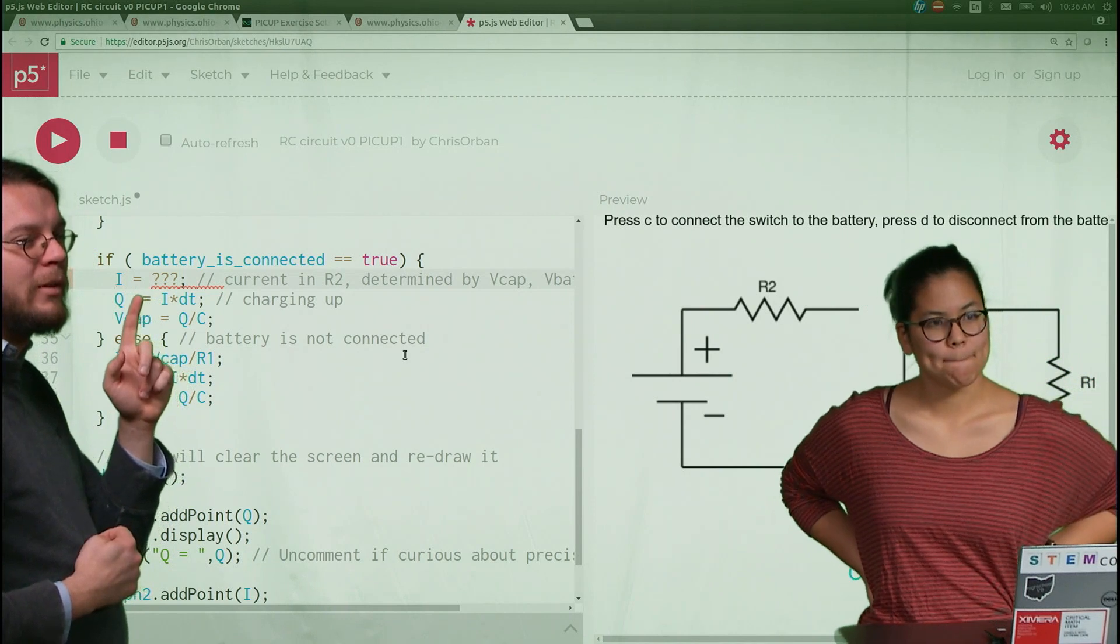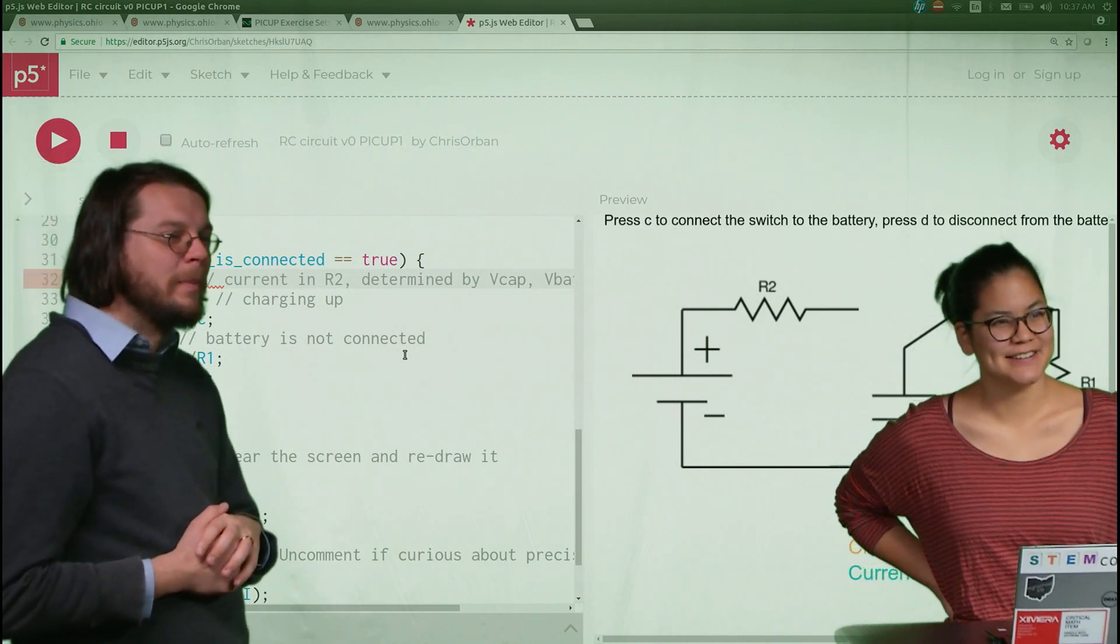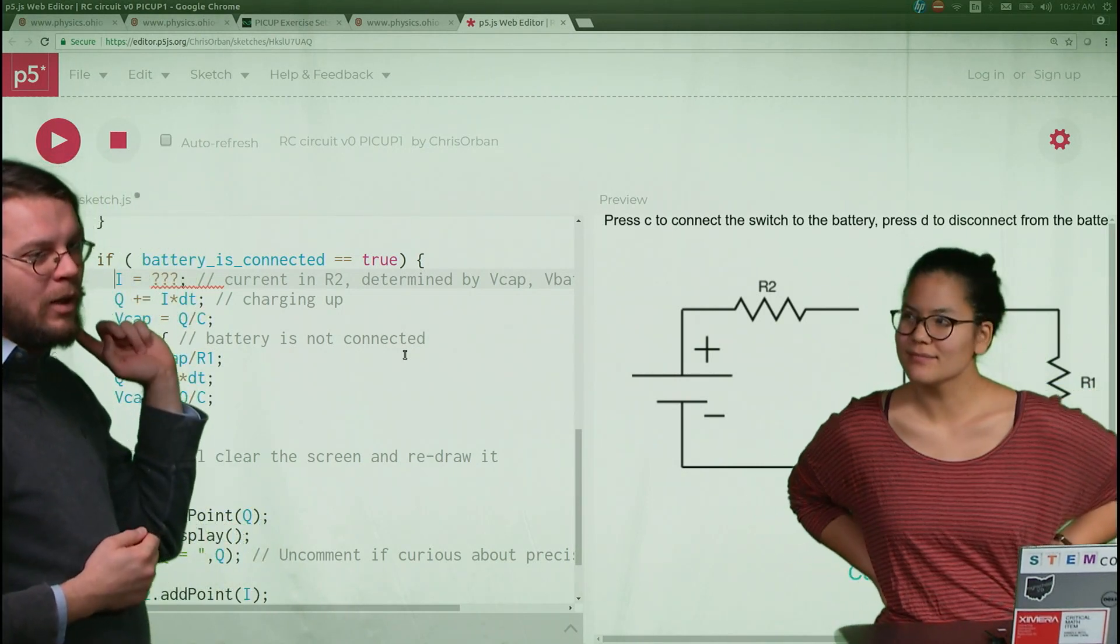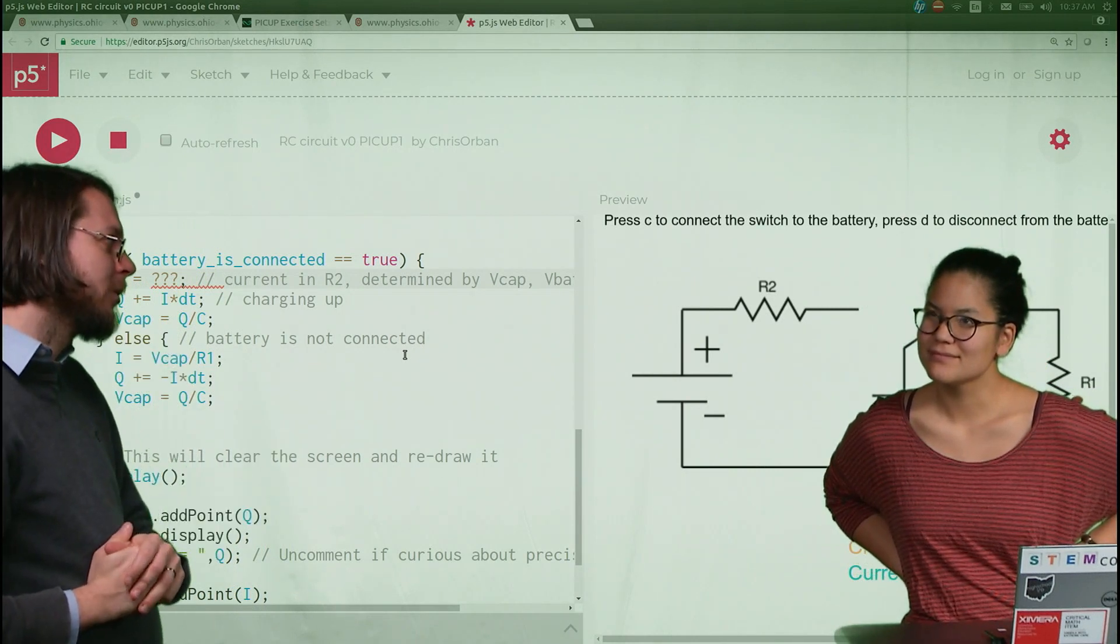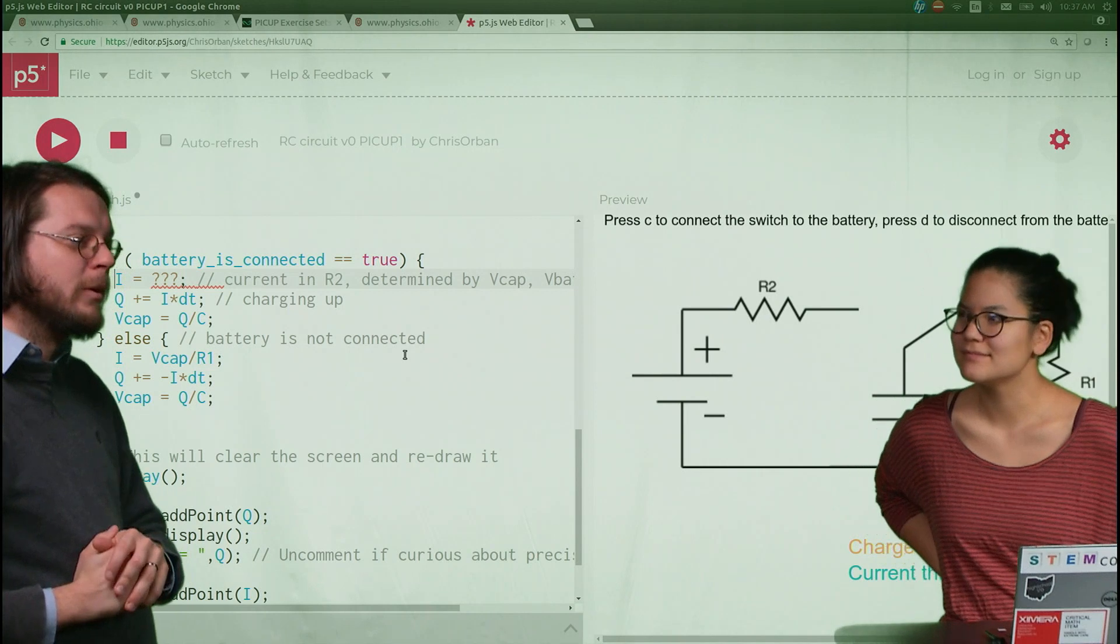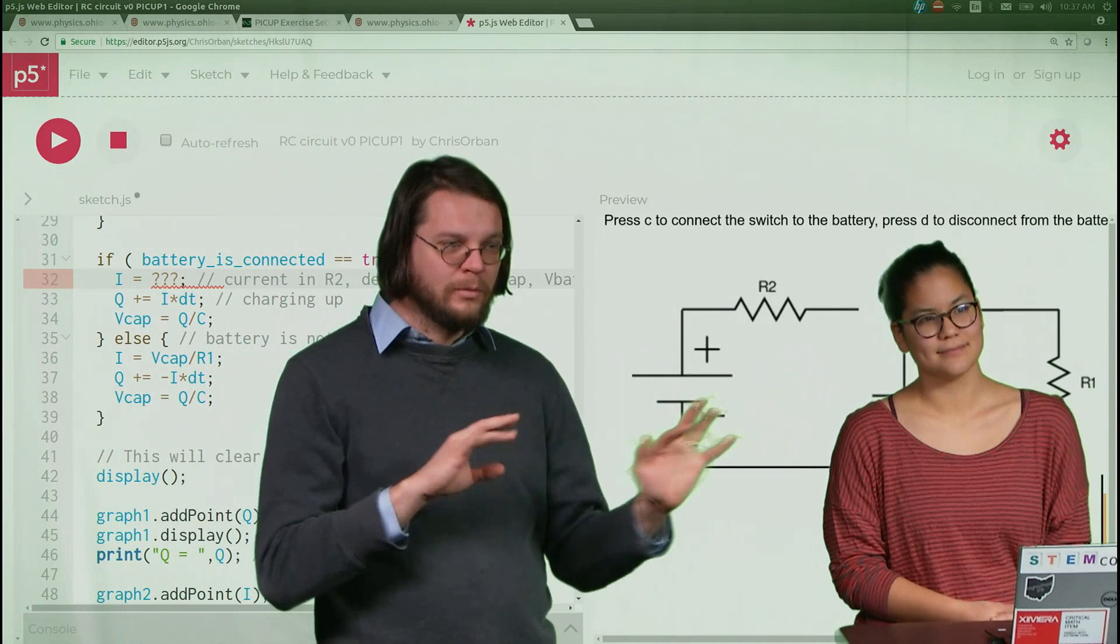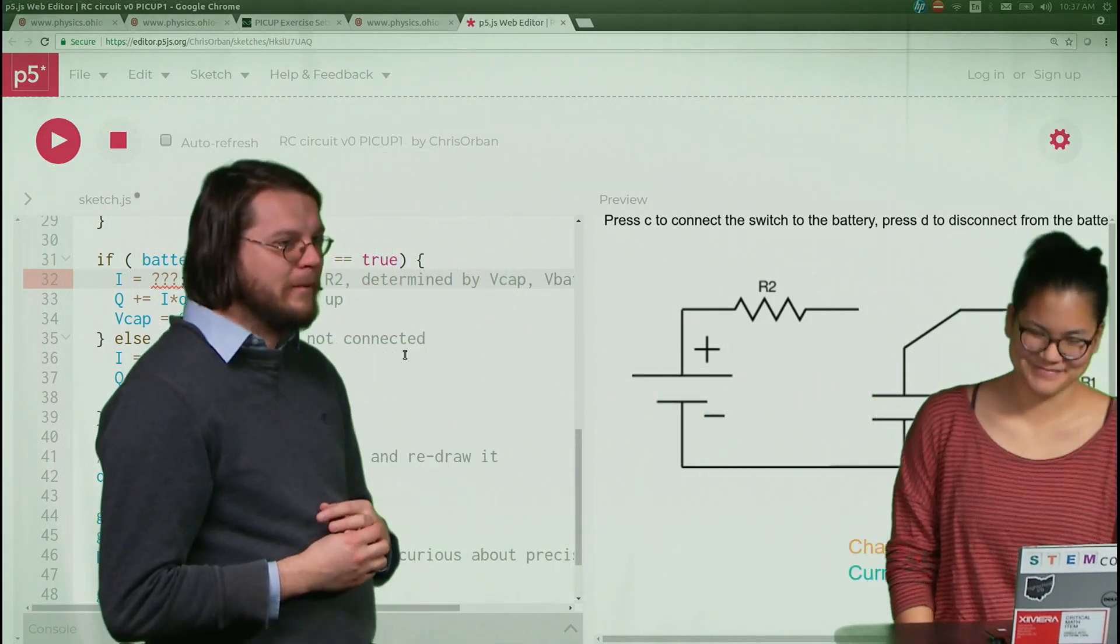The only question is what do we put in these question marks? Because clearly the code is not liking these question marks. There's a bunch of red there. Yeah, what do we put in those question marks? I think the best way to answer that question is to go to the glass board and think about this for a minute. So leave that as the brain teaser and we'll transition to the glass board, all right?